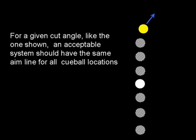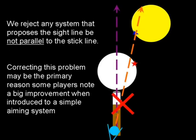So most aiming systems, or any reasonable aiming system, will have exactly the same sight line for any one of these shots. So I reject any aiming system that proposes the sight line not be parallel to the stick line. In fact, there's many players, even very experienced players, who, when introduced to a simple aiming system like fractional ball aiming system or something like that, think it's the greatest thing since sliced bread. I think the explanation for this is that they have not been aiming parallel to the stick line, like is shown here. And I think any simple aiming system that gets them to aim parallel to the stick line will let them take advantage of the symmetry we've been talking about.